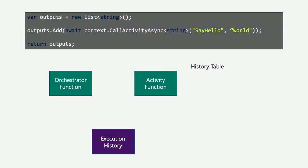How does durable functions work behind the scenes? In the gray box is my durable function code — a really simple orchestrator that's just going to call the say hello function and pass in the value 'world'. Behind the scenes, the durable functions extension is going to interact with a storage provider like Azure Storage to monitor and maintain the state for you.